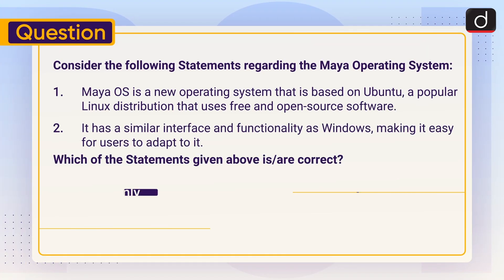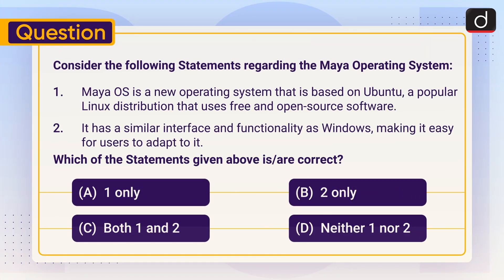Now it's time for the practice question. Consider the following statements regarding the Maya operating system. One: Maya OS is a new operating system that is based on Ubuntu, a popular Linux distribution that uses free and open source software. Two: It has a similar interface and functionality as Windows, making it easy for users to adapt to it. Which of the statements given above is or are correct? One only, two only, both one and two, or neither one nor two?